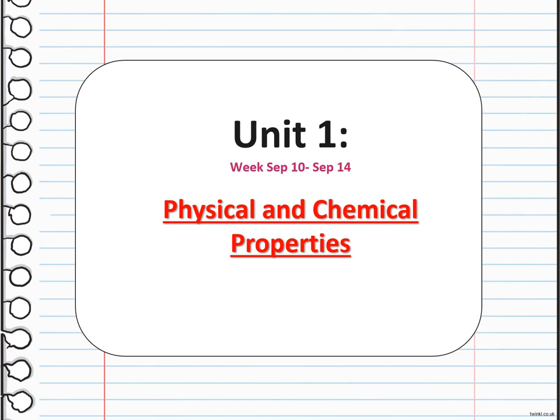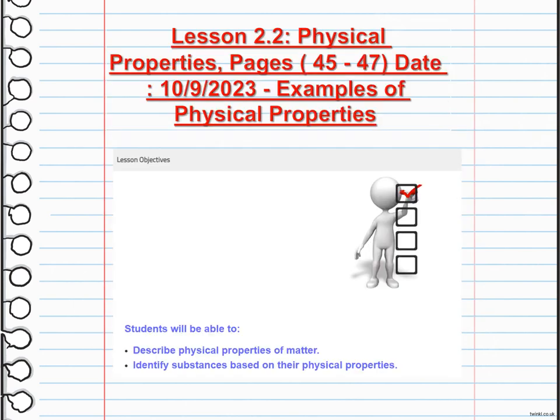Hello my dear students, and welcome to week 2 overview, September 10th to September 14th. During this week we are going to talk about physical and chemical parts of the lesson. Physical properties, pages 45 to 47, examples of physical properties. Your main objectives for this lesson are to describe physical properties of matter and identify substances based on their physical properties.